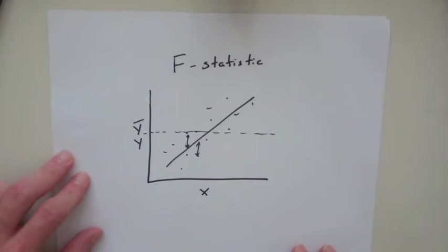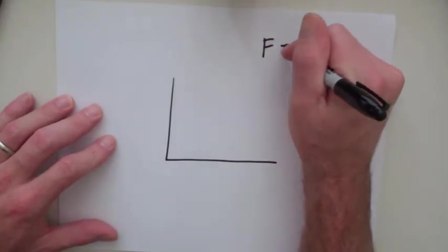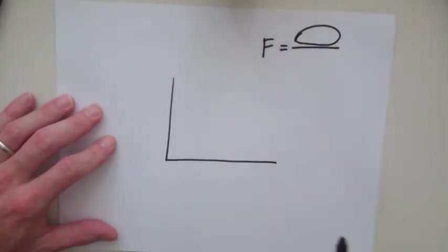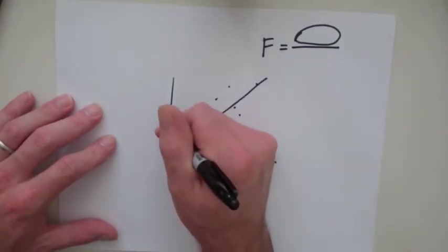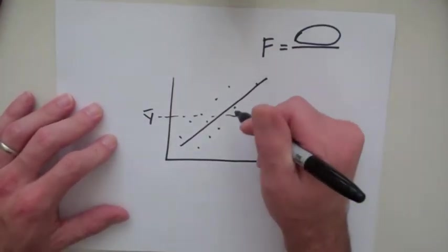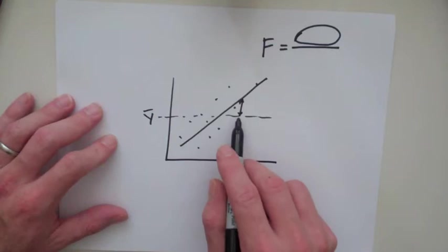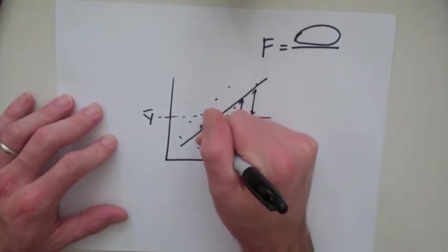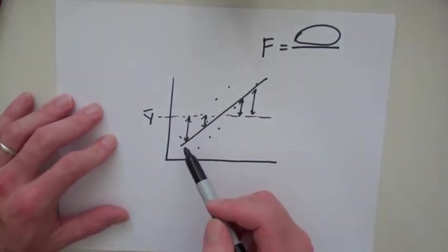When we're thinking about the f statistic, the first thing in the f, and I'm going to draw a new graph, the first thing about the f that we're going to talk about is the numerator. f equals this numerator, and we'll redraw a bunch of points. The numerator is actually, here's your y-bar value, the distance from the line to the y-bar average. So it's essentially the slope of the line.